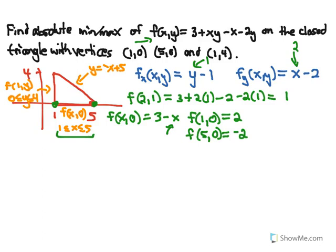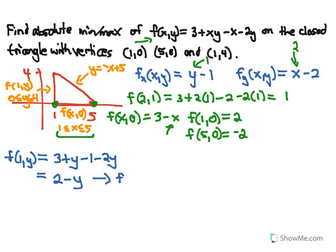For the vertical boundary, f(1, y): plugging in 1 for x gives us 3 plus y minus 1 minus 2y, which simplifies to 2 minus y. This is a decreasing function as y increases, so the max is at y = 0 — the point (1, 0), which we already know gives 2. It's minimized when y is as large as it can be, which is y = 4, so at the point (1, 4) we get negative 2.